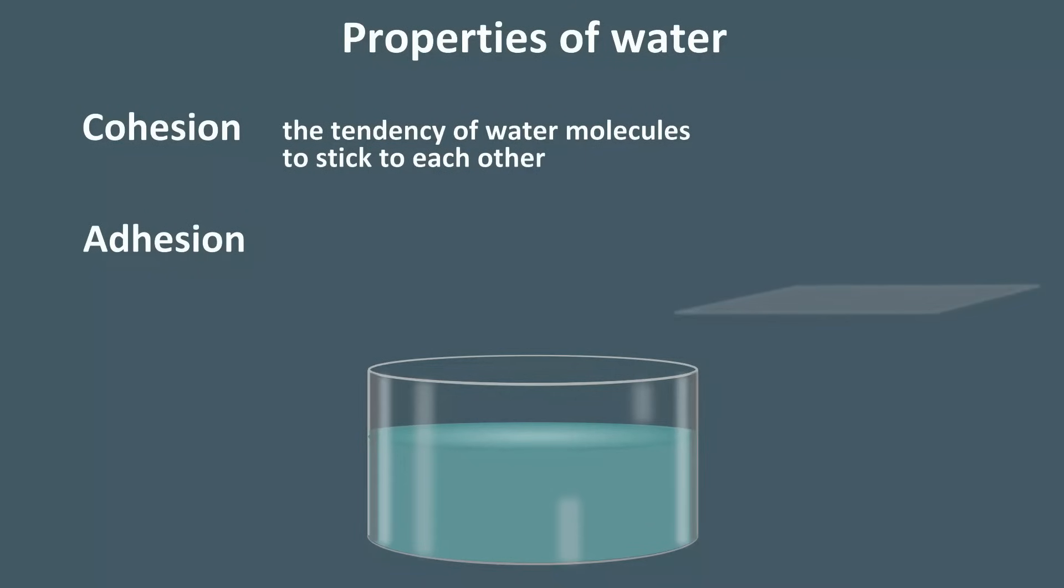Cohesion is the tendency of water molecules to stick to each other. Cohesion is responsible for surface tension, the tendency for a water droplet to adopt a spherical shape.